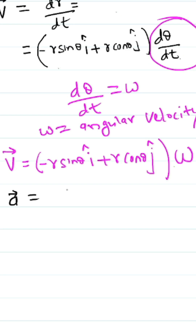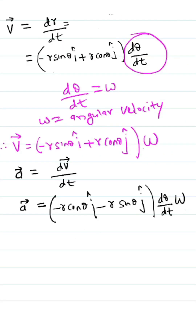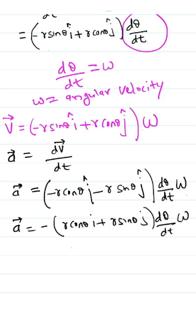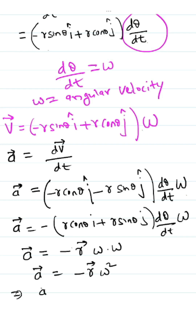Now, acceleration equals dv/dt, which equals (−r cos θ î − r sin θ ĵ) × (dθ/dt) × ω. Taking minus common, we get (r cos θ î + r sin θ ĵ) × dθ/dt × ω. Therefore, vector a = −vector r × ω², which implies vector a equals −r ω², directed towards the center.